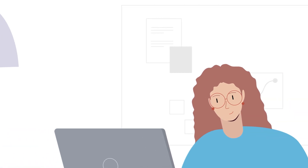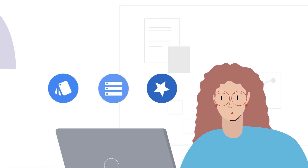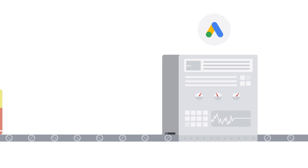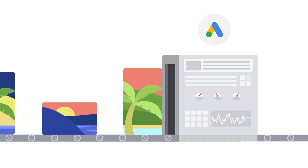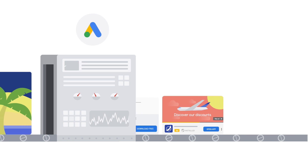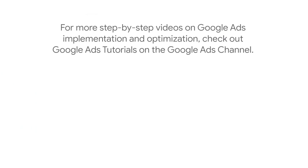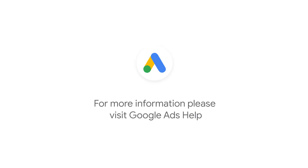Once you've built your assets following these best practices, let machine learning do the heavy lifting by serving the right ad format to each user. For more step-by-step videos on Google Ads implementation and optimization, check out Google Ads tutorials on the Google Ads YouTube channel. If you have any questions or for more information, please visit Google Ads Help.